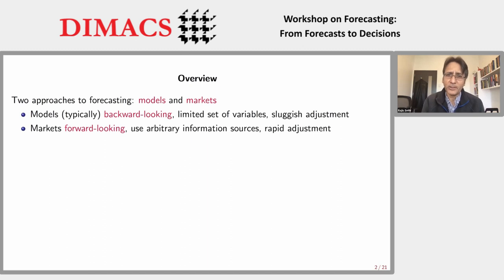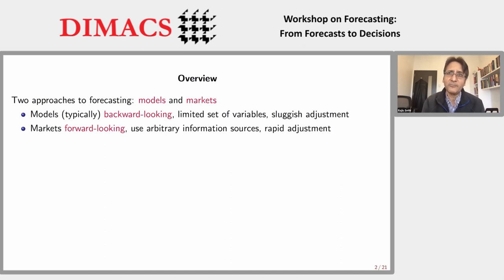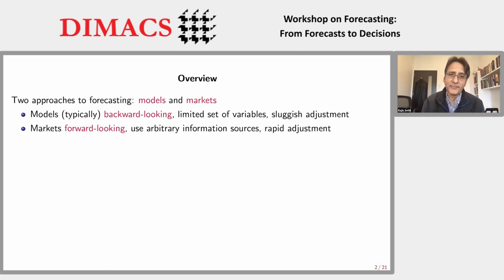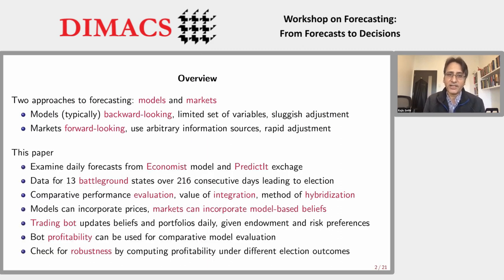Generally speaking, models are backward looking. They are based on a limited set of variables like opinion polls, economic fundamentals, incumbency, and so on, and they adjust sluggishly to news. In contrast, markets are fundamentally forward looking. The traders who buy and sell securities can use arbitrary sources of information and generally have very rapid adjustments. So you have two very different approaches to forecasting, and what we do in this paper is try to look at the comparative performance of these two, although there are issues about evaluation that Bo raised, which we'll address.